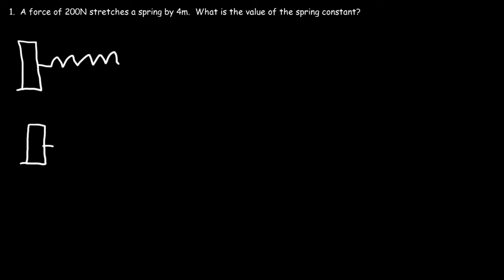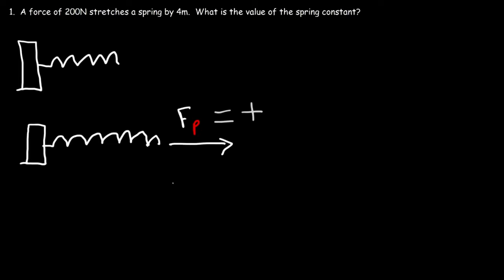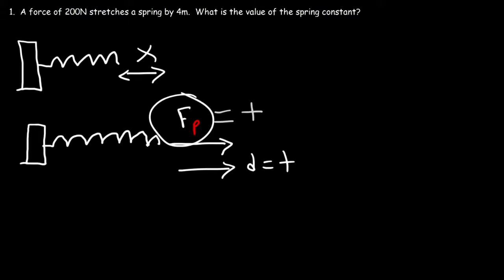Now what we're going to do is apply a force to stretch the spring towards the right. We'll call that force Fp, since we're pulling the spring towards the right. That force is positive, and the displacement of the spring is also positive. We stretched it a distance x, and it turns out the force needed to stretch it by distance x is proportional to x. So Fp is equal to Kx, where K is a proportionality constant, also known as the spring constant.